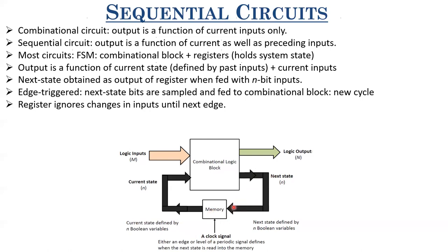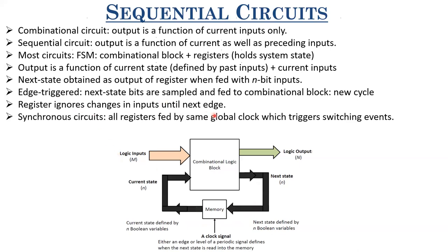Only whatever data is present at the active clock edge — whether positive or negative clock edge — is being sampled and transferred. After that, when the clock is one or zero, even if these inputs are changing, it won't affect the bits here at the output. That is an important virtue of this register. It ignores changes in inputs until the next clock edge or next active edge, depending upon whether the register is positive or negative edge triggered. It waits until that active clock edge even if inputs are changing.